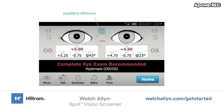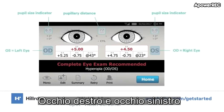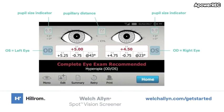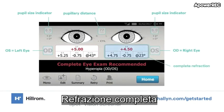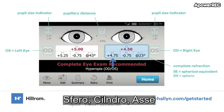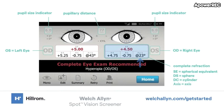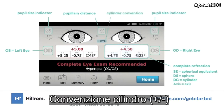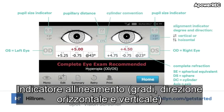The results screen displays: pupillary distance, pupil size indicator, right eye, left eye, complete refraction, spherical equivalent, sphere, cylinder, axis, cylinder convention, alignment indicator, degree, horizontal, and vertical.